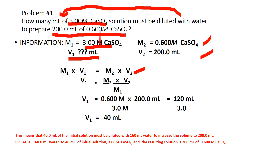Using the equation M1 times V1 equals M2 times V2, since V1 is unknown the equation becomes V1 equals M2 times V2 divided by M1. Substituting the given values and canceling units — cancel molarity and cancel volume units — multiply: 0.6 times 200 equals 120 mL, divided by 3.